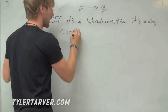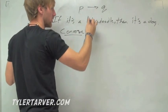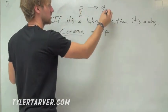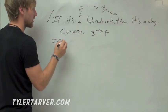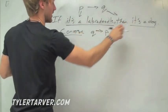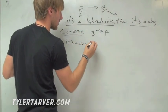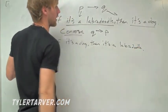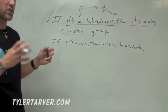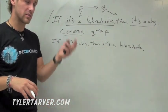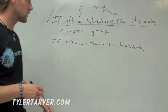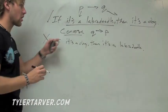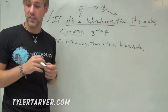The next thing you need to know is converse. Converse means we switch those two — we leave the if and then where they are, and just switch the other two, going from Q to P. So it becomes: if it's a dog, then it's a labradoodle. Is that true? If you have a dog, does it have to be a labradoodle? No — it could be a boxer, a Pomeranian, or any other kind of dog. So our converse, when we switch the hypothesis and the conclusion, doesn't always have to be true. In this case, it's not.